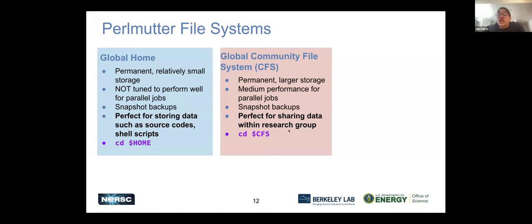The community file system is a really good place to share data within your research group because whatever's in there is accessible to everybody in your project. If you want to share things with your collaborators, this is the place to do it. You can access it similar to home — CD and then dollar sign CFS — which takes you to the top-level community file system, and then slash followed by your project name.